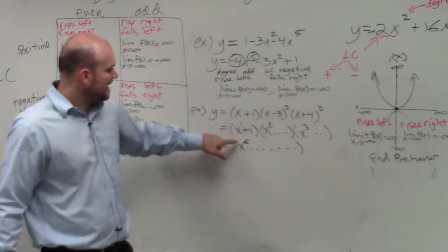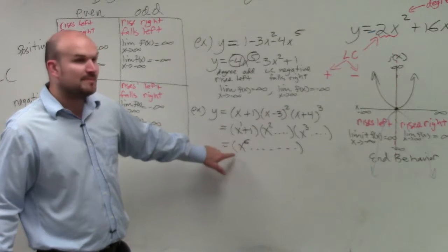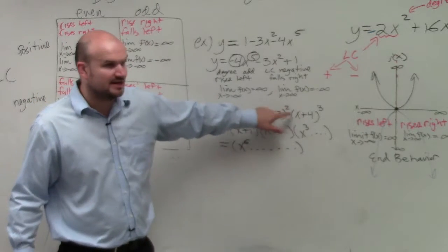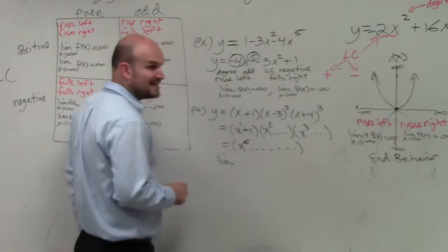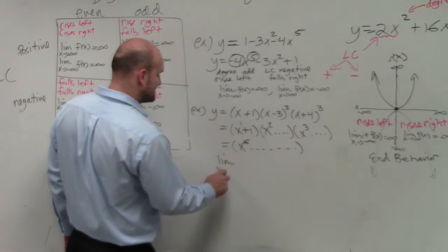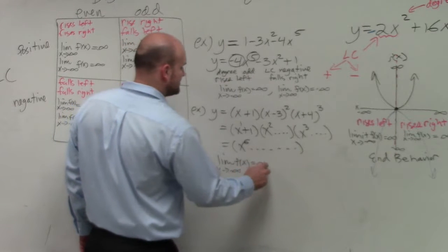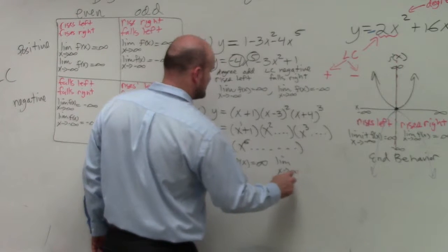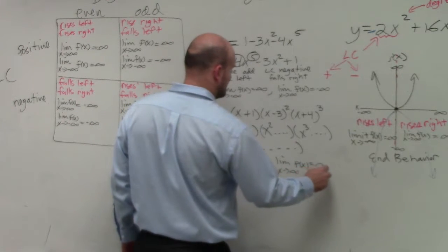but I know that my degree is even, and I have a positive coefficient, right? Because none of these coefficients had a negative coefficient. So therefore, I know it rises left, rises right. So as x approaches negative infinity of f of x, that equals infinity. And as limit as x approaches positive infinity of f of x, that equals infinity.